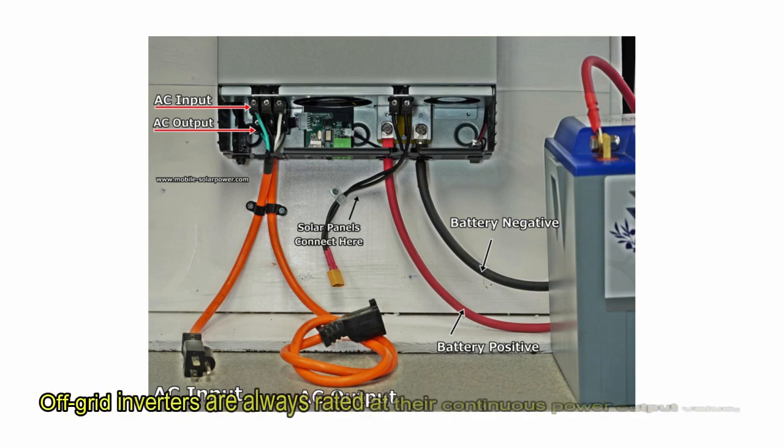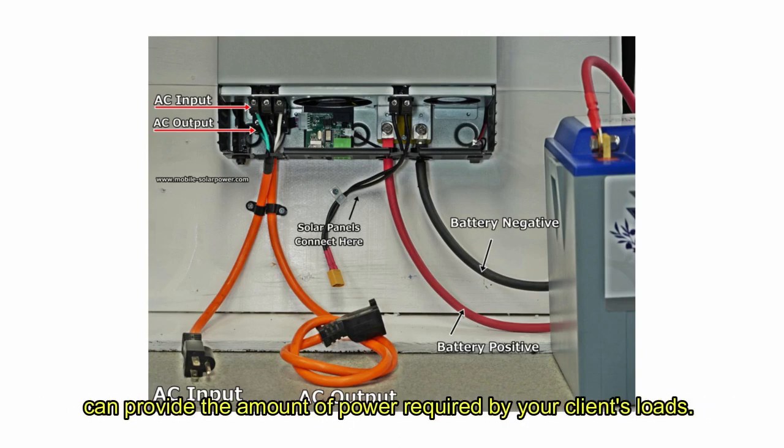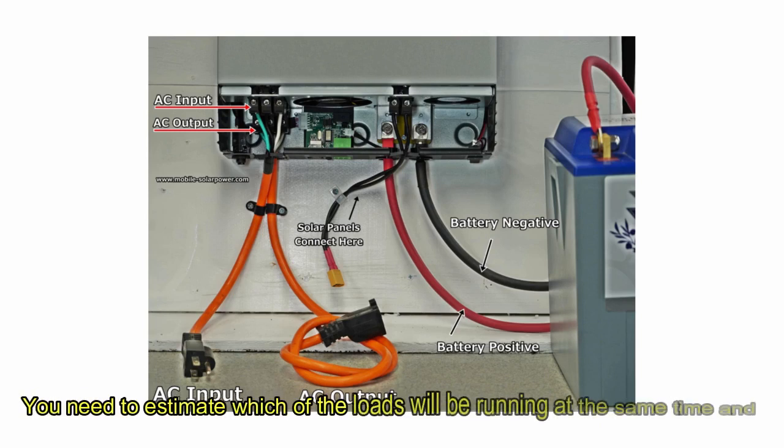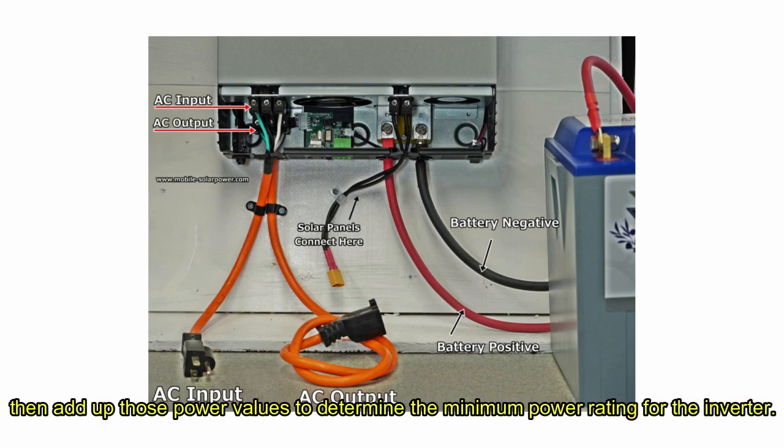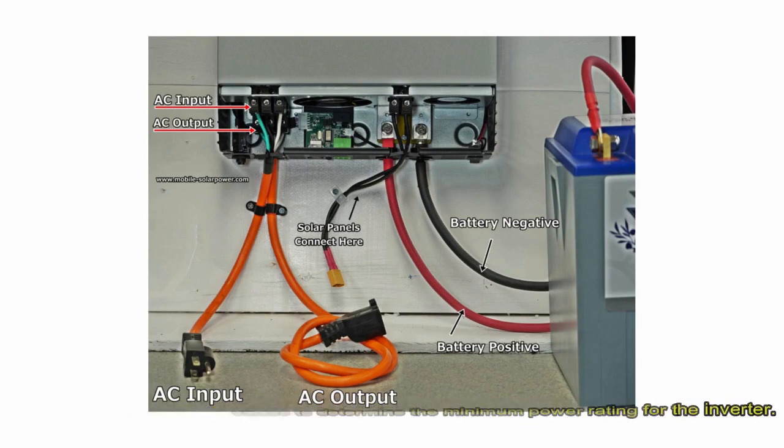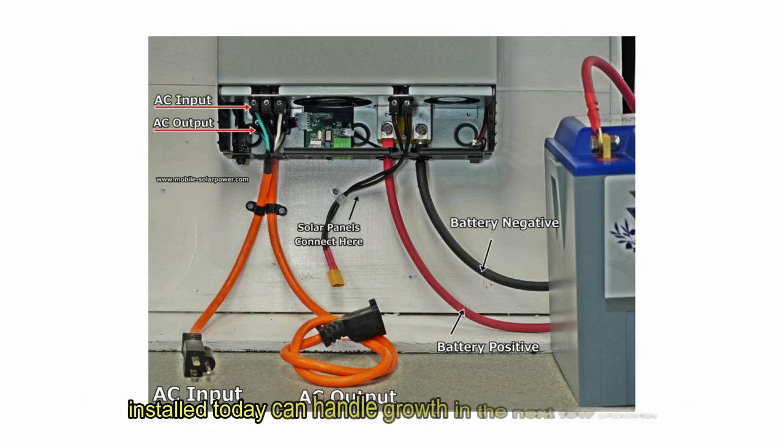Off-grid solar inverters are always rated at their continuous power out value, which means you need to make sure that the inverters you select can provide the amount of power required by your client's loads. You need to estimate which of the loads will be running at the same time and then add up those power values to determine the minimum power rating for the inverter. Consider future loads that may require power, so that the inverter installed today can handle growth in the next few years.